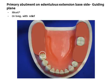The guiding plane on the extension base side is short, about one-third the occlusal-gingival height. In cases where a long guide plane exists, the proximal plate of the cast framework may be adjusted to provide relief in the gingival area.